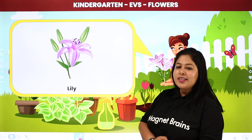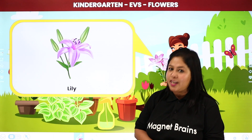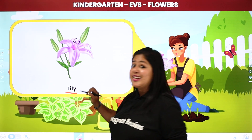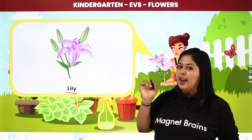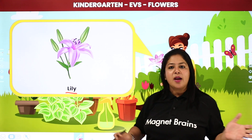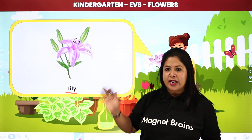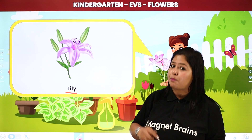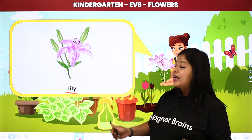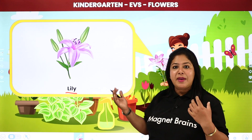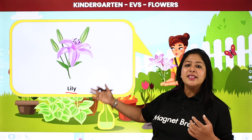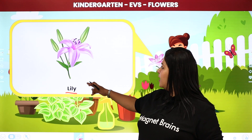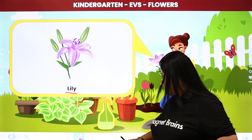Now remember, this is also a very beautiful flower known as lily — L-I-L-Y. Lily also comes in different different colors — purple hota hai student, white hota hai, pink hota hai. Isse hum bouquets mein bhi lagate hain. So this is known as lily — L-I-L-Y.